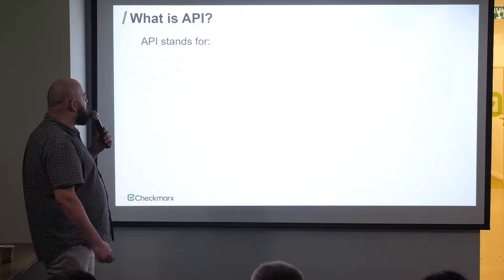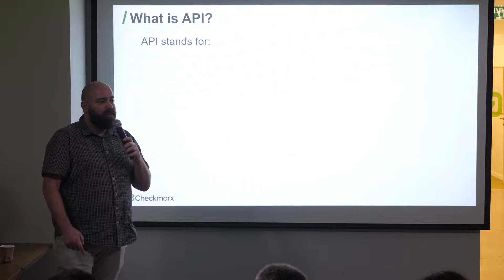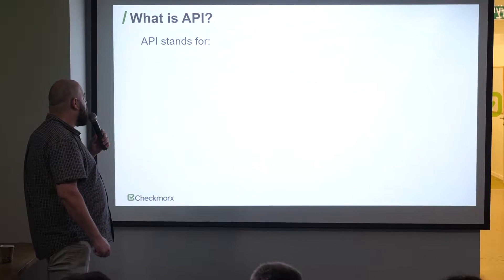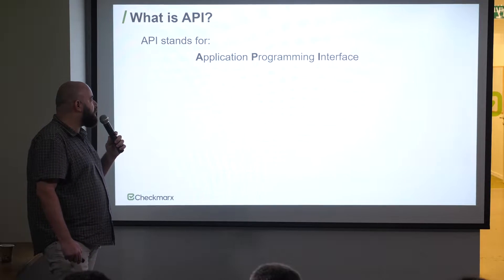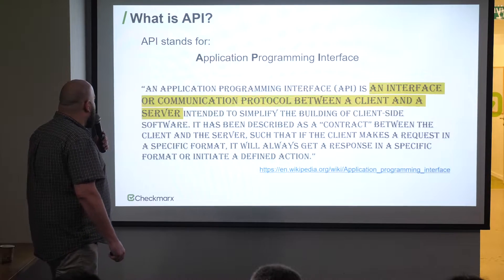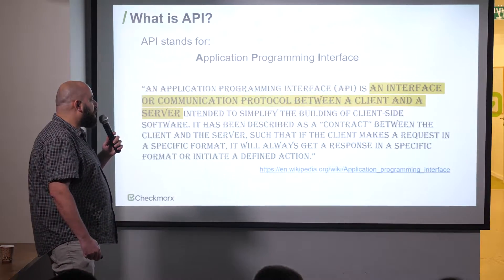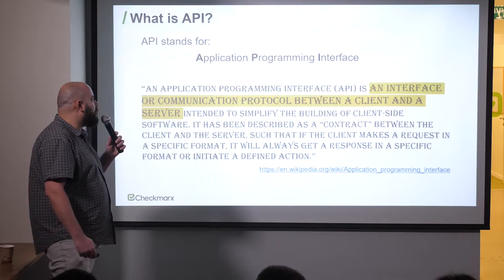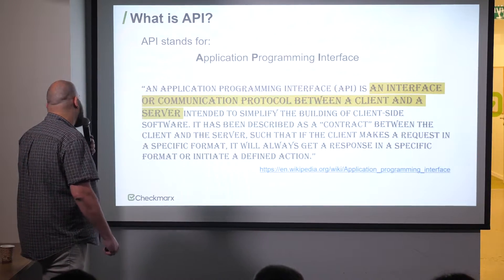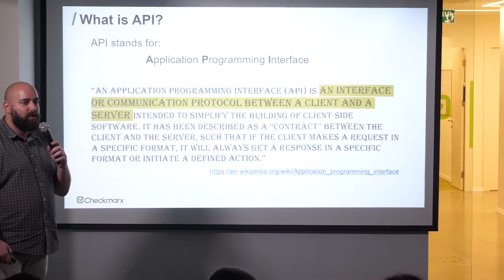What is an API? API stands for Application Programming Interface. According to Wikipedia, an API is an interface or communication protocol between a client and a server, intended to simplify the building of client-side software. That really tells us all we need to know about what an API is.